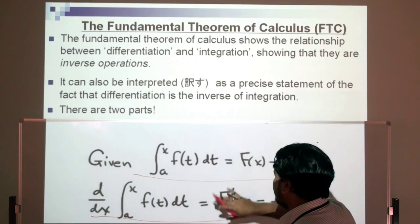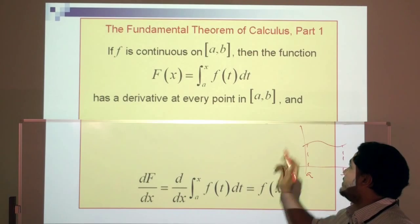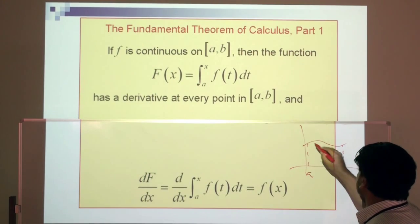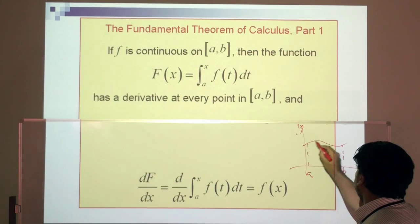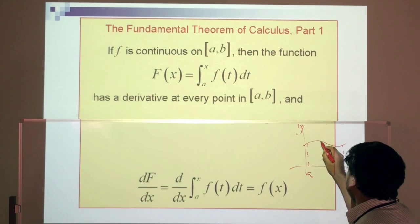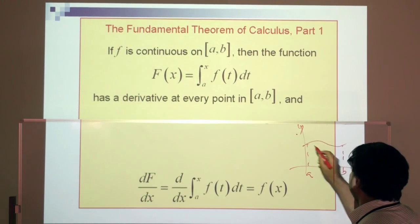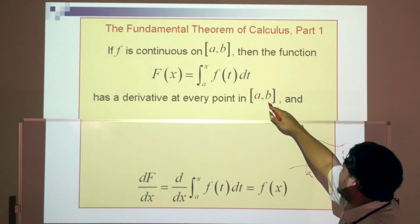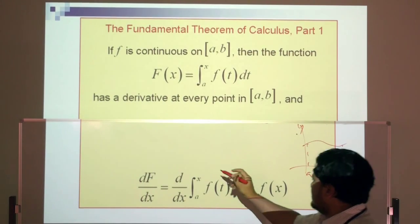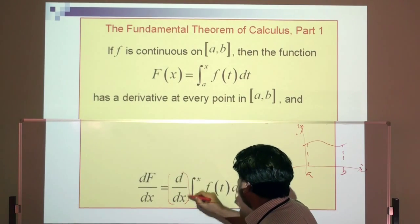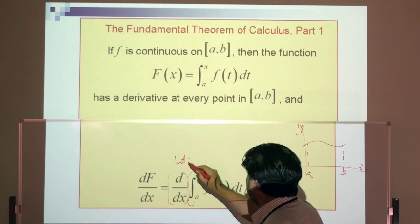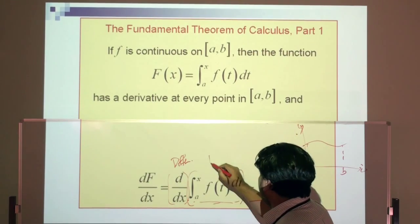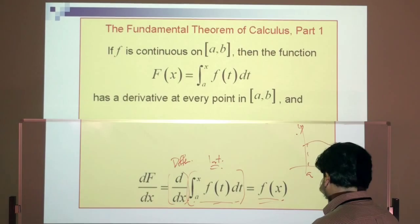FTC Part 1: if F is continuous on [a, b] — meaning every point on the graph has a derivative — then the function capital F(x) equals the integral of the function f(t) with respect to t. If we differentiate an integral, we get back the original function.